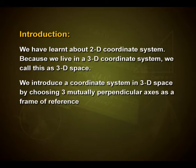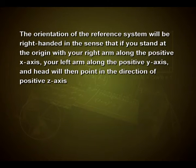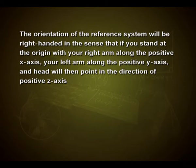We introduce a coordinate system in three dimensional space by choosing three mutually perpendicular axes as the frame of reference. The orientation of the reference system will be right-handed, in the sense that if you stand at the origin with your right arm along the x-axis and left arm along the positive y-axis, your head will then point in the direction of the positive z-axis.